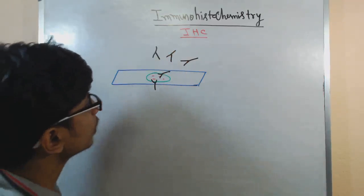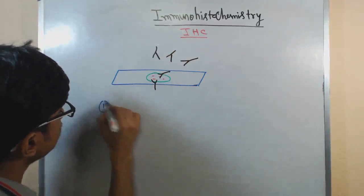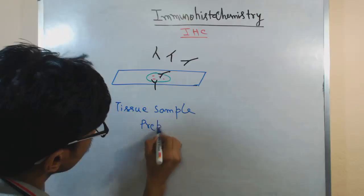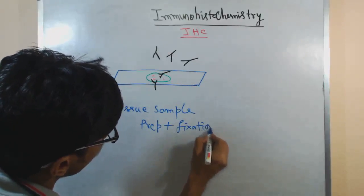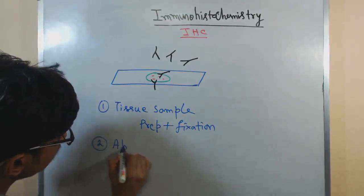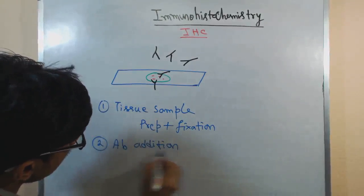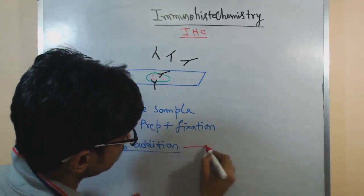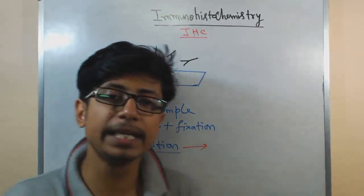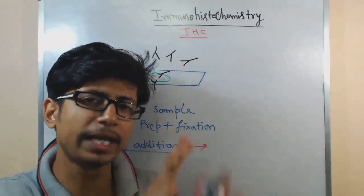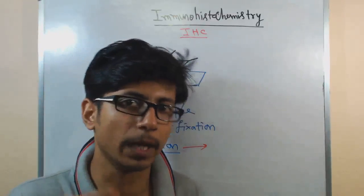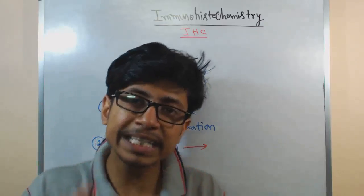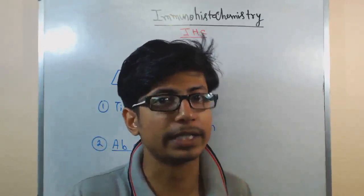The antibody that we produce can be of different types. The second stage is the addition of antibody, and the antibody we use can be of two different types. If we want to specifically interact with a specific antigen present in the cell — only that antigen, only that biomarker — we produce monoclonal antibody. Monoclonal antibody means it will only interact with one single epitope of antigen, nothing else.